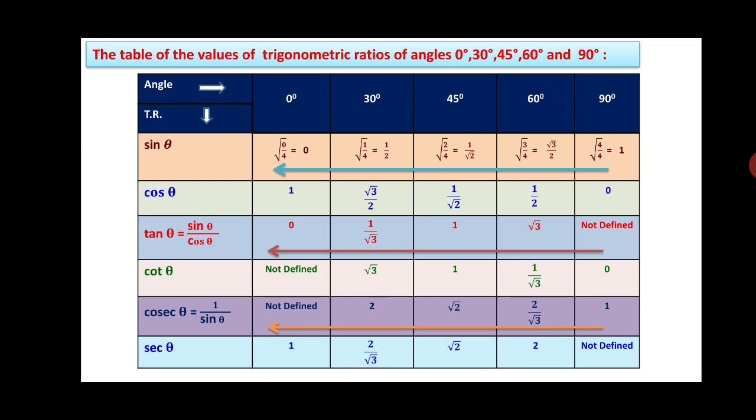Divide each by 4: 0/4, 1/4, 2/4, 3/4, 4/4. Now take the square root of each. So sin 0° = √(0/4) = 0. Sin 30° = √(1/4) = 1/2. Sin 45° = √(2/4) = 1/√2. Sin 60° = √(3/4) = √3/2. Sin 90° = √(4/4) = 1. Notice there is a reverse arrow from right to left for the cosine row.